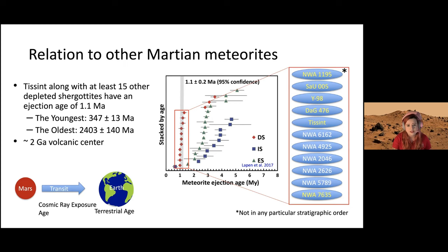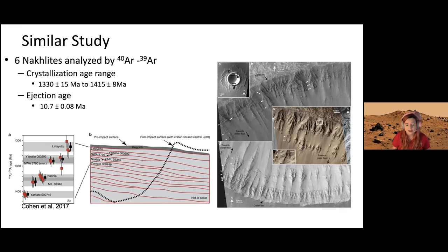There's a similar study with nakhlites that proposed a similar process. They took six nakhlites, dated them through argon-argon, and they had the same ejection age. Once dated, you see in figure A this progression of ages. They proposed a potential ejection site. We assume these are perfect flows not interacting with anything, but it could be a series of dikes and sills for all we know.